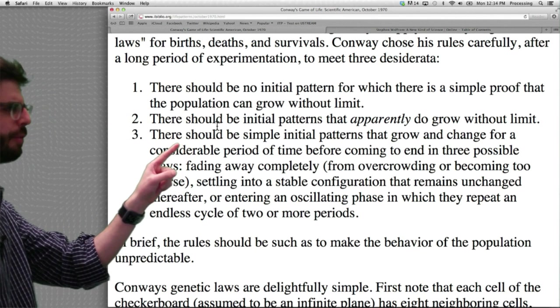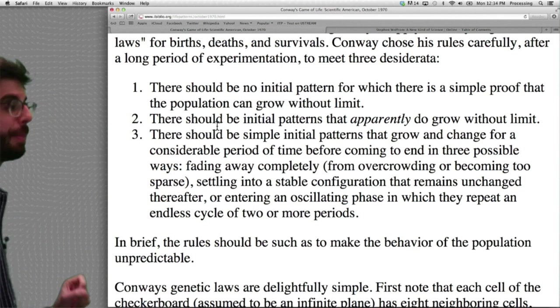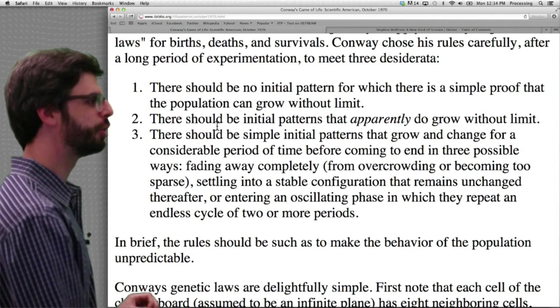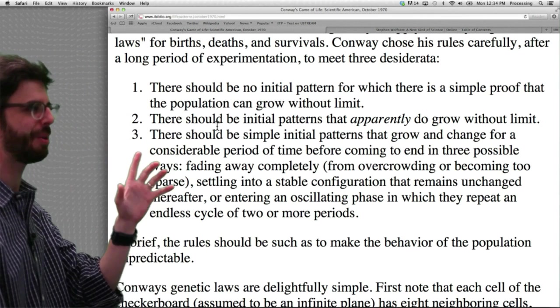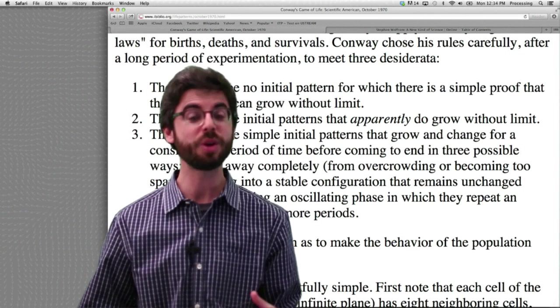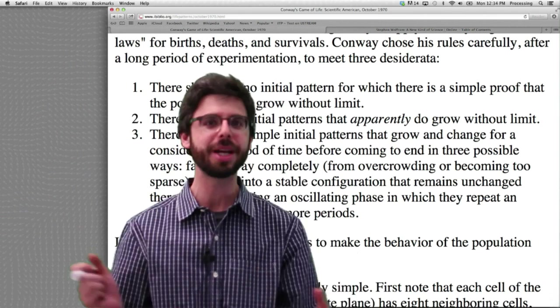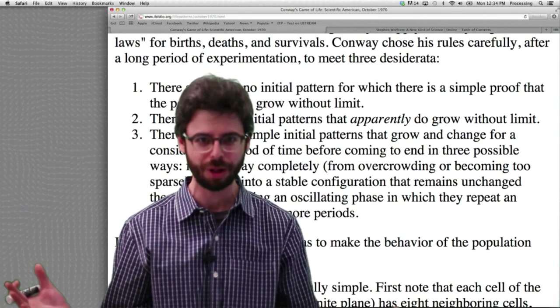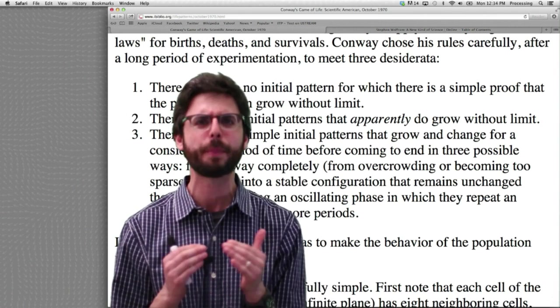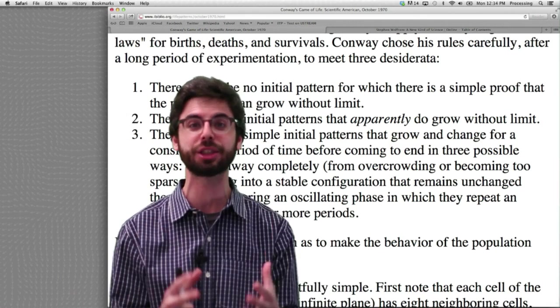There should be no initial pattern for which there is a simple proof that the population can grow without limit. There should be initial patterns, however, that apparently do grow without limit. So in other words, this system can kind of grow out of control, but there's no way to predict or prove exactly how it's going to behave just from its initial pattern.